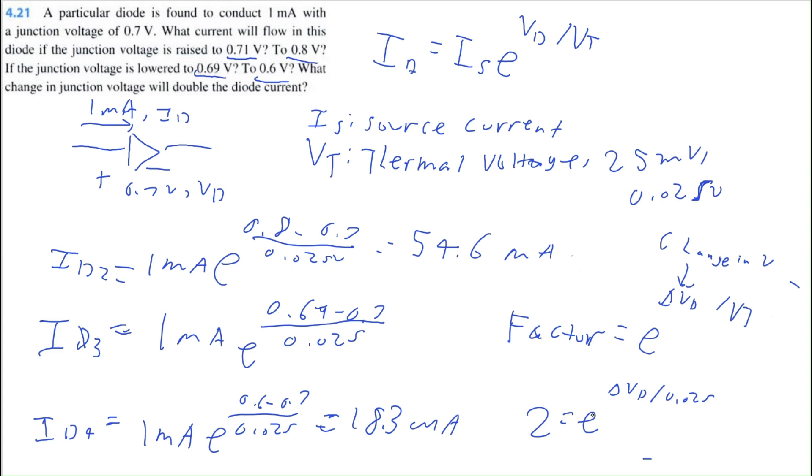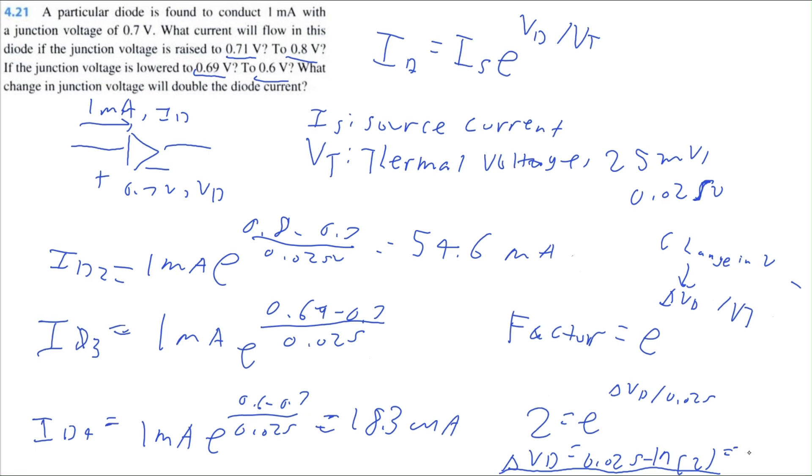And then you can take the natural log of both sides, remove this exponent, multiply 0.025 to the other side. So you would get delta VD is equal to 0.025 times the natural log of 2. And don't have that number off the top of my calculator. Be right back. Okay, sorry about that. I got 57.6 milliamps for that answer.